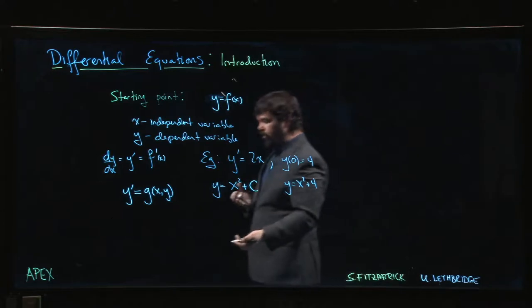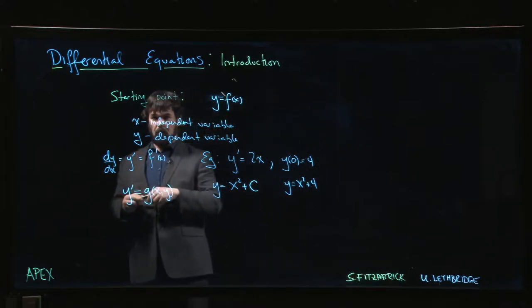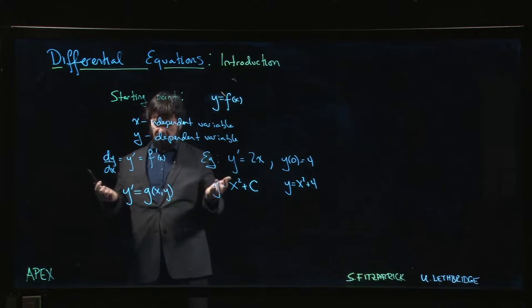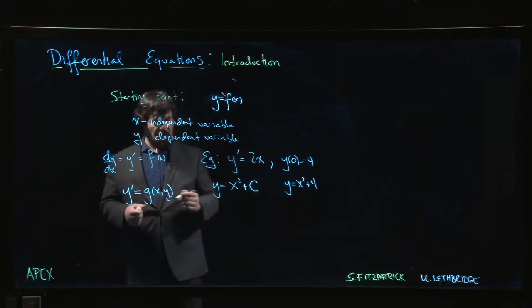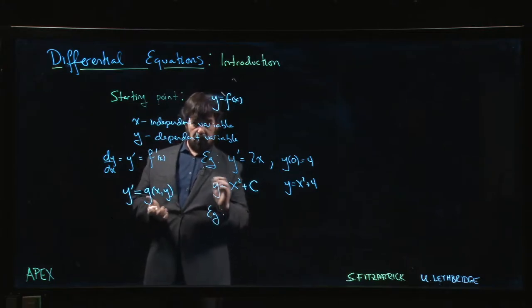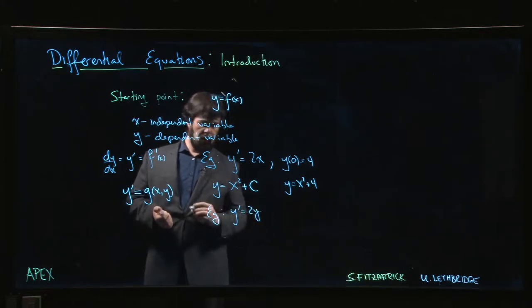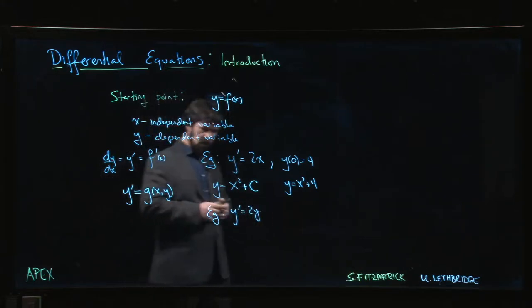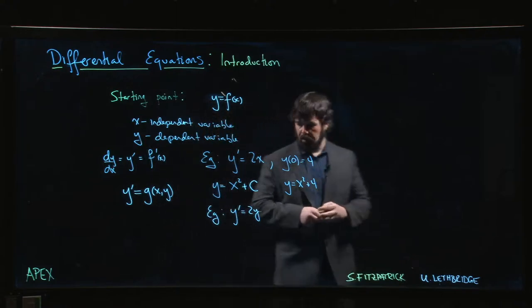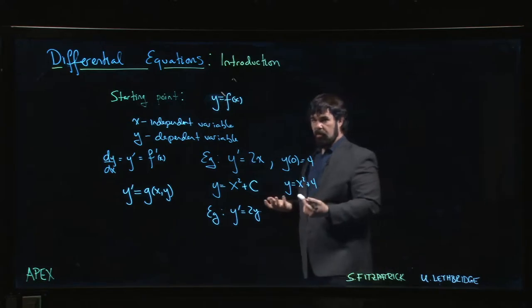And sometimes we can do this, sometimes we can't. We'll see techniques that allow us to solve certain types of equations of this form, but not all types of equations of this form. One example we're going to see, one of the very first examples we'll do, what if we did instead of y prime equals 2x, what if we did 2x plus 2y? These are the sorts of questions that you might want to try to answer.